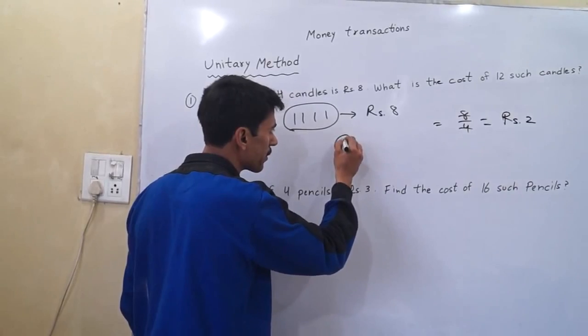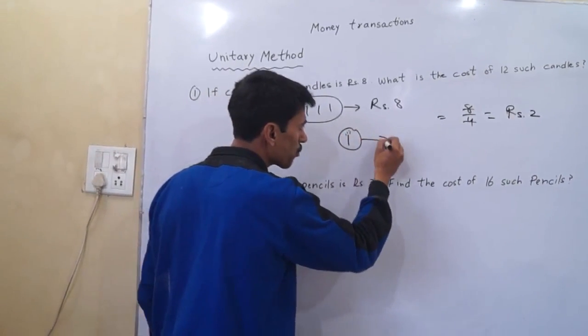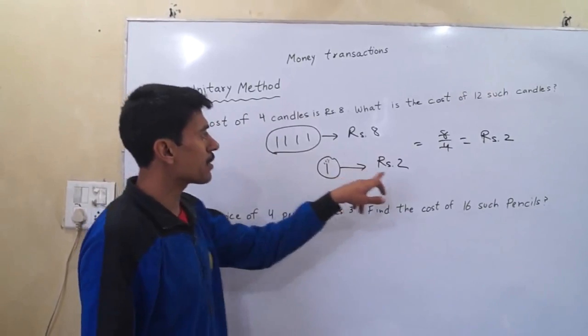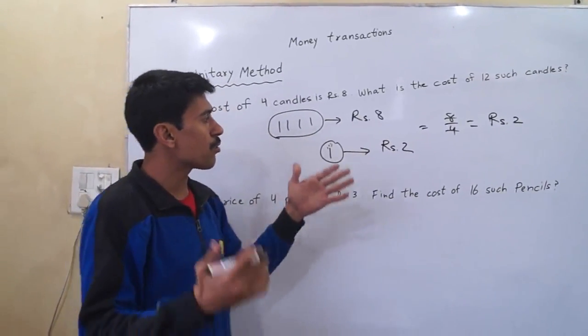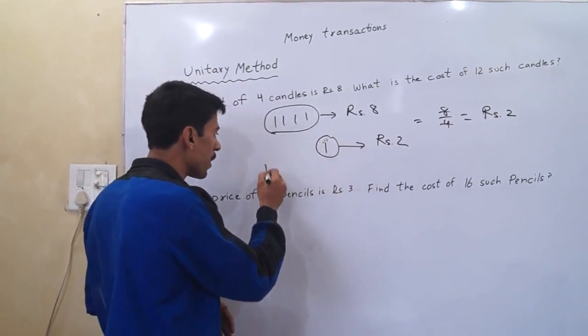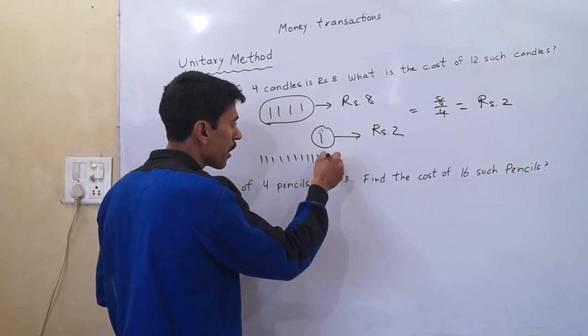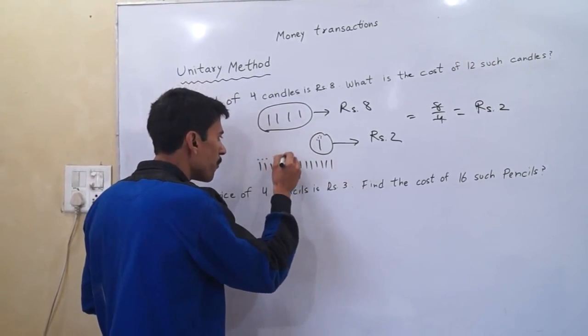To buy one candle, I have to pay rupees 2. If I need twelve candles - one, two, three, four, five, six, seven, eight, nine, ten, eleven, twelve - this is the candles.